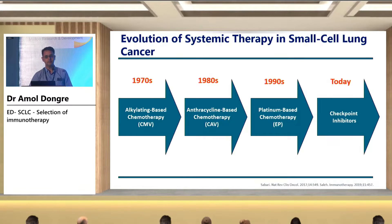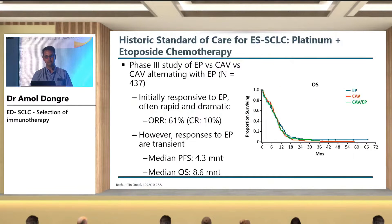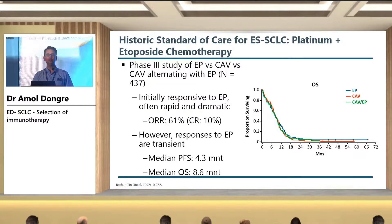If we see the evolution of systemic therapy in small cell lung cancer: in the 1970s, we used alkylating agents; in the 80s, combination of anthracycline-based chemotherapy; in the 90s, platinum-based; and now in today's era, it's mostly checkpoint inhibitors. The historic standard of care for extensive stage SCLC is basically platinum plus etoposide chemotherapy. This phase 3 study shows that even though there are initial responses — rapid and dramatic, with overall response rate around 61% — the responses are really transient. The median PFS is around 4.3 months, whereas the median OS is around 8.6 months.